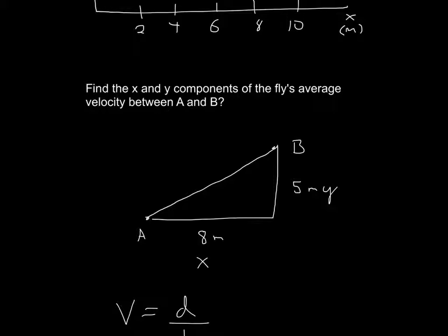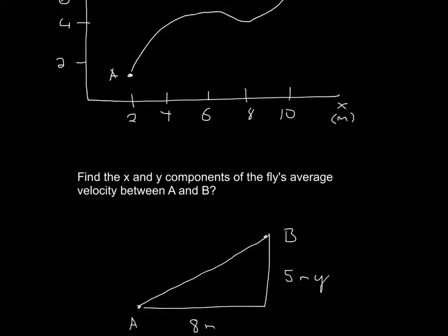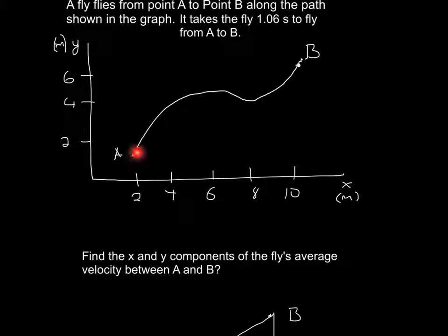So if I just drew my triangle here, so it's 8 meters horizontally and 5 meters up. And that's all it is, because it's from A to B, wherever B is, the x component. So it's 10 minus 2, and then up here, it's going to be 6 minus 2, right here.